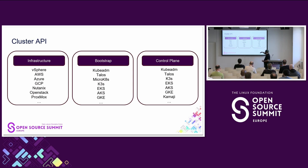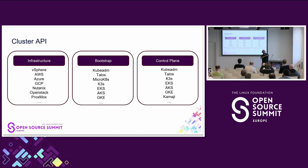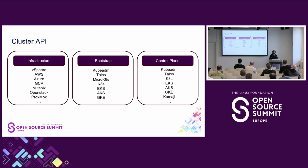Control plane providers include kubeadm, Talos, and Kamaji. Kamaji is a CNCF project that gives you an experience where the control plane runs as pods in a management cluster — you don't see it in your workload cluster, similar to EKS, AKS, and GKE. EKS Anywhere and Google Anthos are also built on Cluster API. So we really have a lot of freedom in how we manage our clusters.